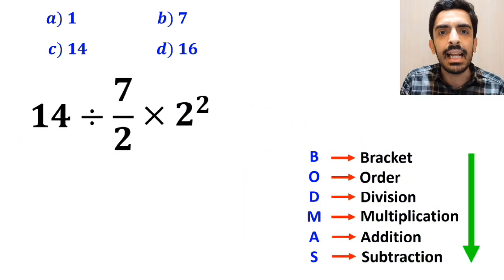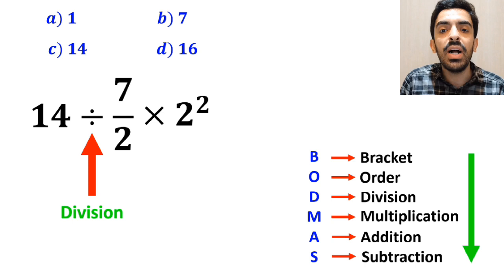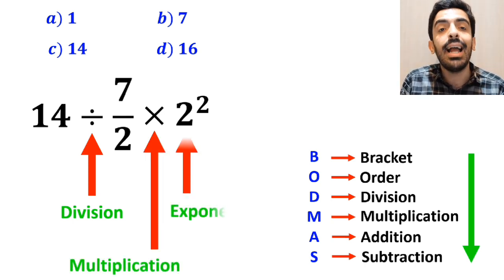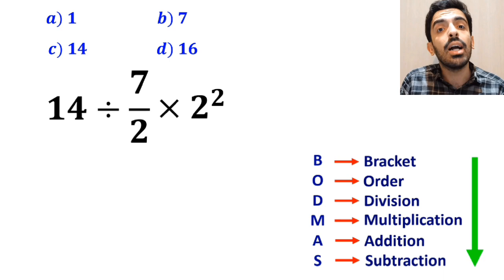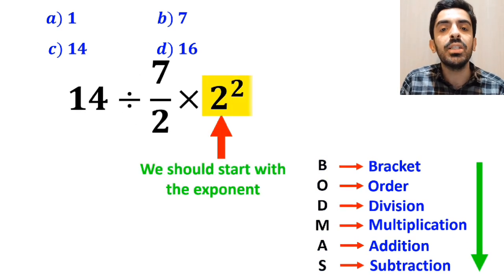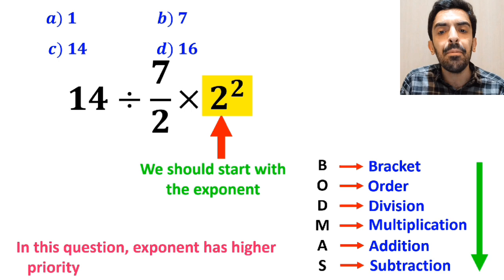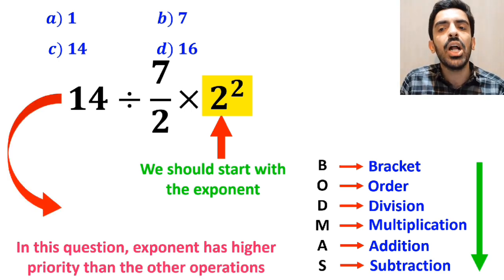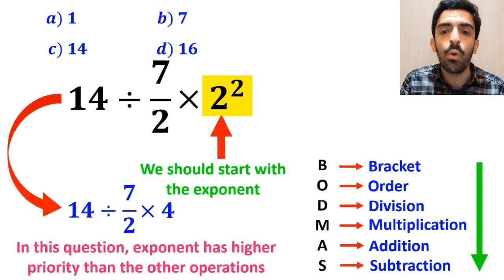As you can see in the image, in this problem, first we have a division sign, then a multiplication sign, and finally exponent. According to the BODMAS rule, we should start with the exponent, because in this question, exponent has a higher priority than the other operations. So, instead of the original expression, we can write 14 divided by 7 over 2 times 4.